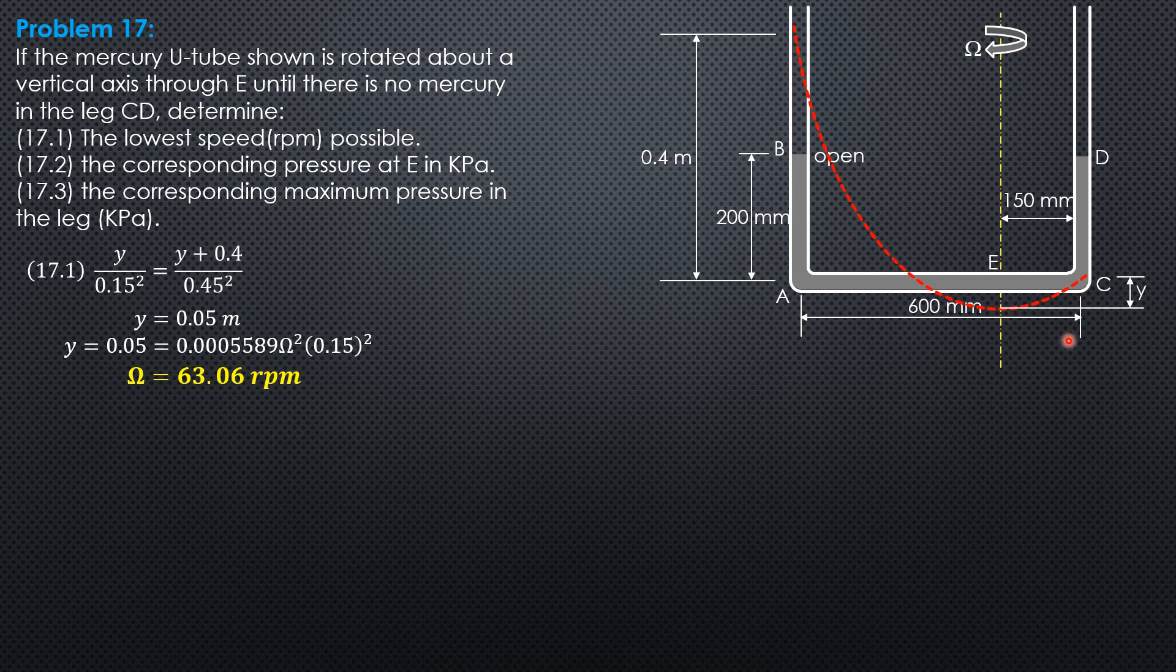The corresponding pressure at E: we call the vertex as O. We sum up pressure from vertex O to E. So the pressure at O, because this represents the surface of equal pressure and the pressure is 0 because it passes through the surface exposed to the atmosphere. So we have pressure at O going up minus specific weight of mercury 13.6 times 9.81 times Y, and Y is 0.05 equals pressure at E. Since pressure at O is 0, pressure at E is negative 6.671 kilopascals.